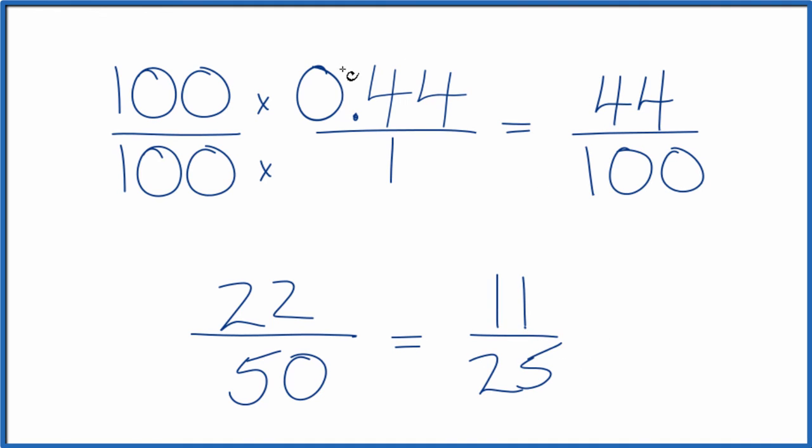So we've converted 0.44, the decimal, to a fraction in simplest terms, 11 over 25. If you divide 11 over 25, or 22 over 50, or 44 over 100, you'll get 0.44.